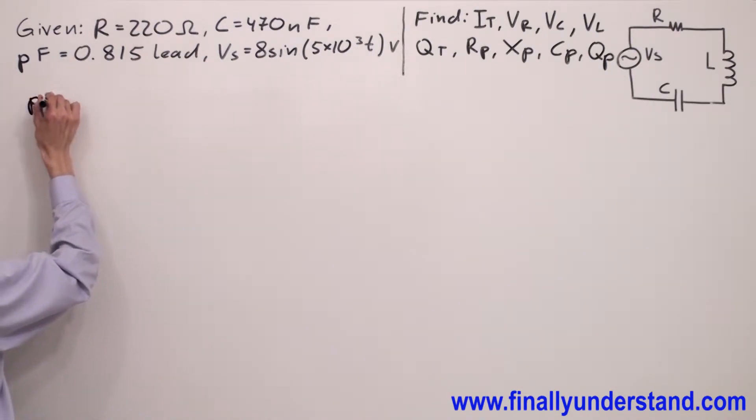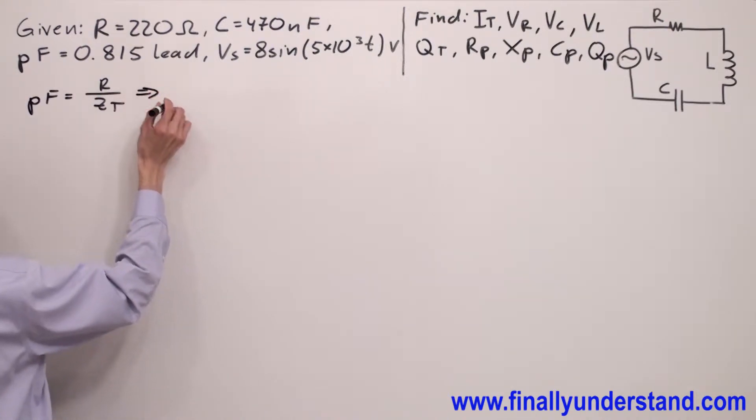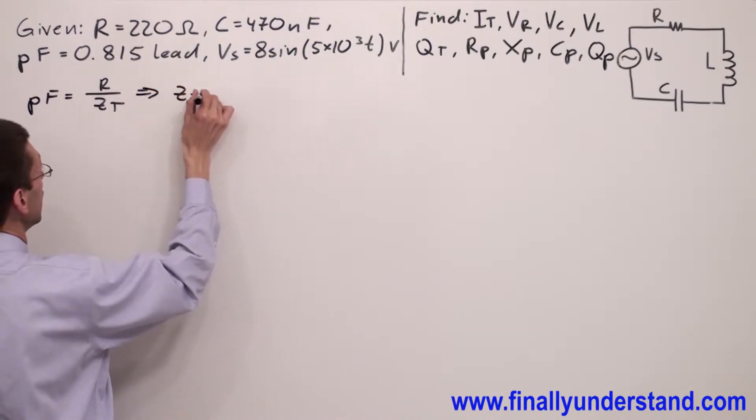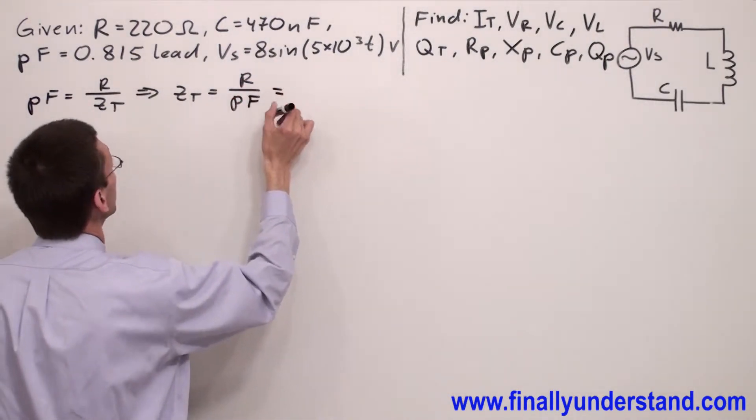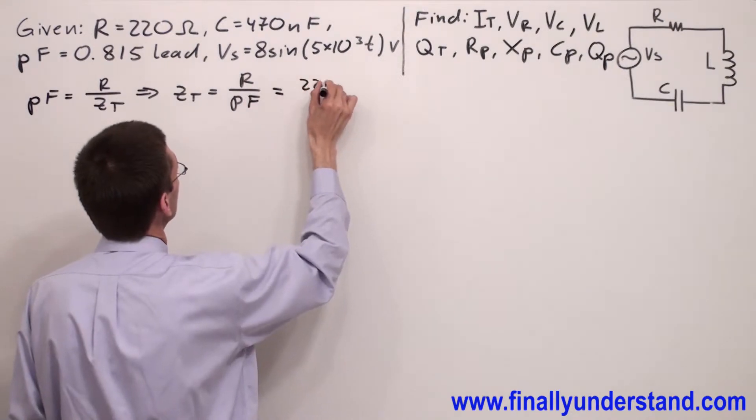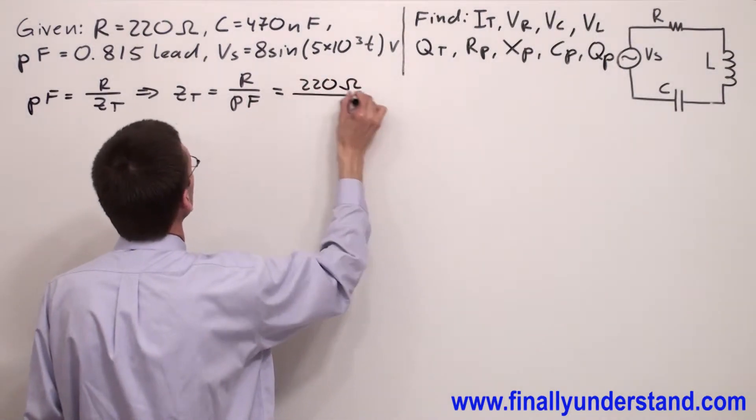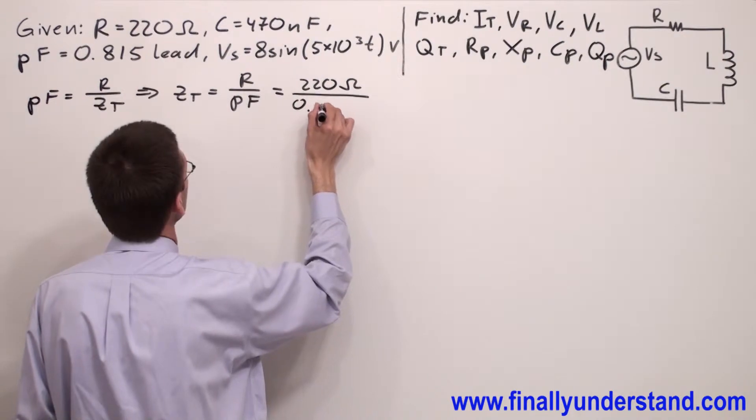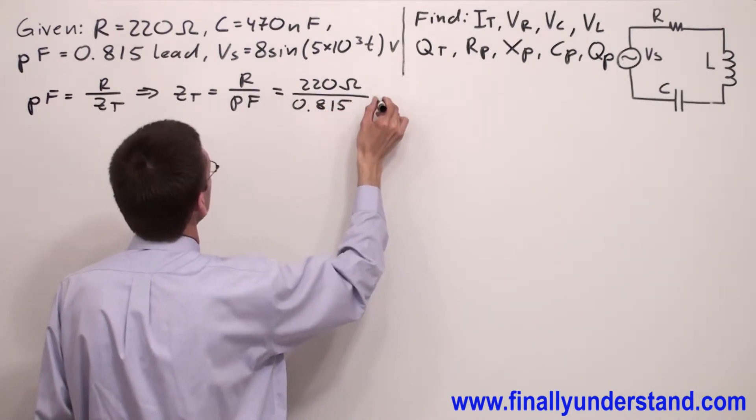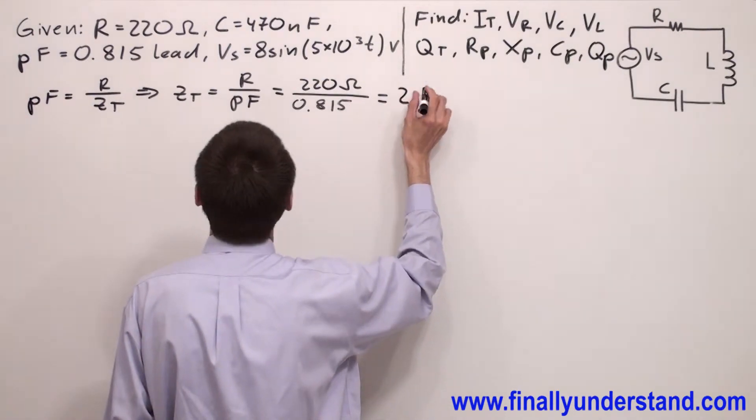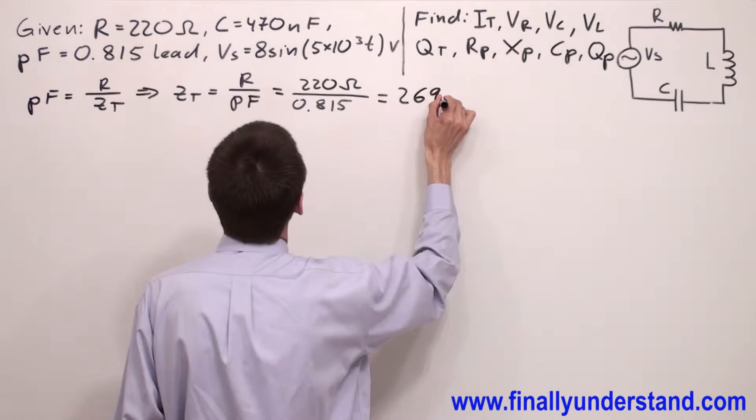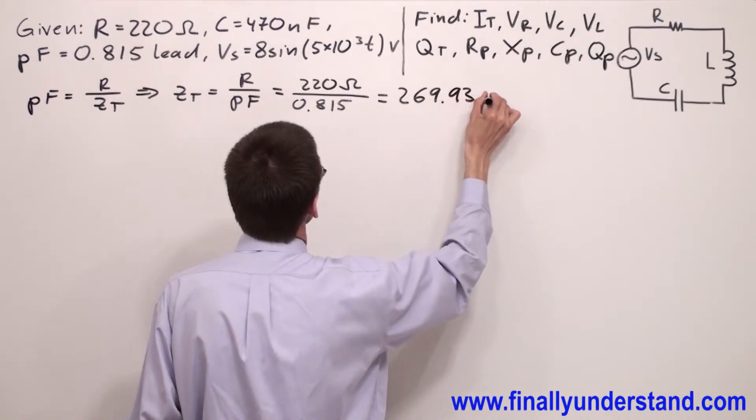We have a formula which says power factor is equal to resistance over Z total. If you are going to solve this formula for ZT, you will obtain Z total is equal to resistance over power factor. Where resistance is equal to 220 ohms over power factor 0.815, this is equal to 269.93 ohms.